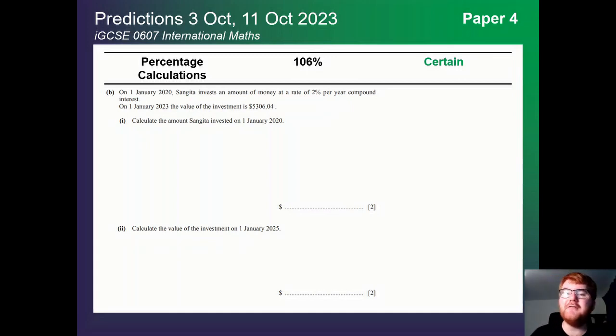Percentage calculations, which I haven't talked about too much so far. Generally, towards the start of the paper, again, working with compound interest, simple interest, reverse percentage change. Again, the percentage of how much it's appeared hasn't really changed that much over the last three years. So this is a guarantee to appear at some point in the paper four. So make sure you've mastered it.